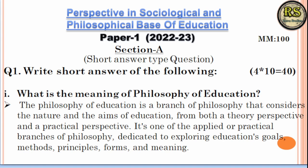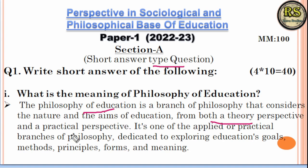Section A is the short answer type questions. So let's start. The first question is: What is the meaning of philosophy of education? Philosophy of education means what is the aim of education, viewed from two types of perspectives: one theoretical and one practical.